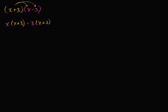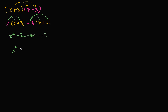Then we apply the distributive property one more time, where we take this magenta x and distribute it across x plus three. So x times x is x squared, and x times three is three x. Then negative three times x is negative three x, and negative three times three is negative nine. We have three x minus three x, so these two cancel out, and we are left with x squared minus nine.